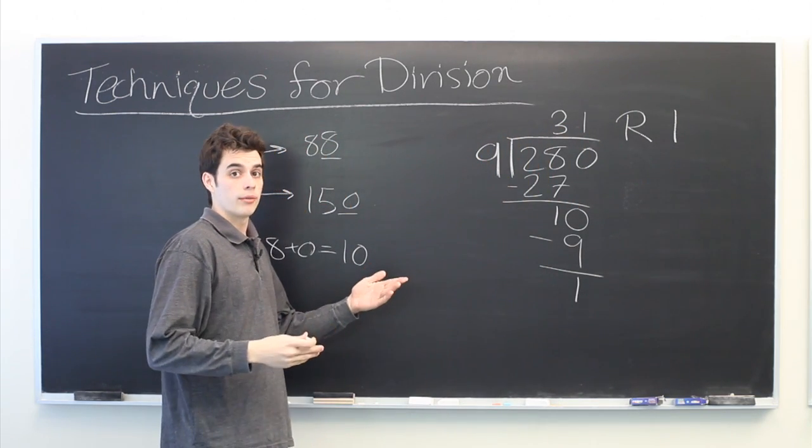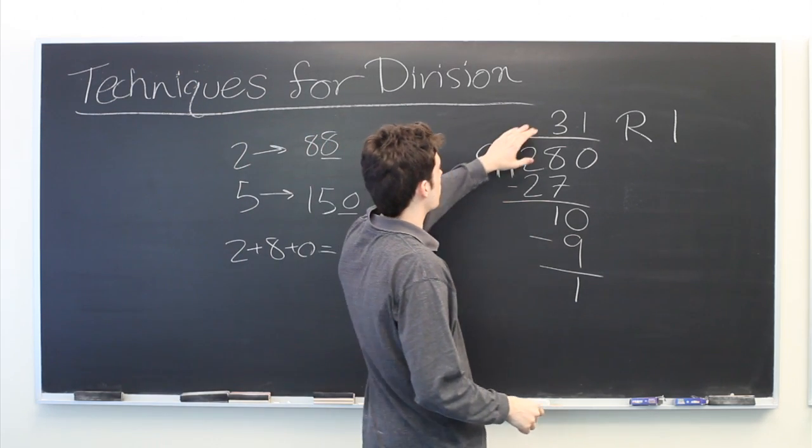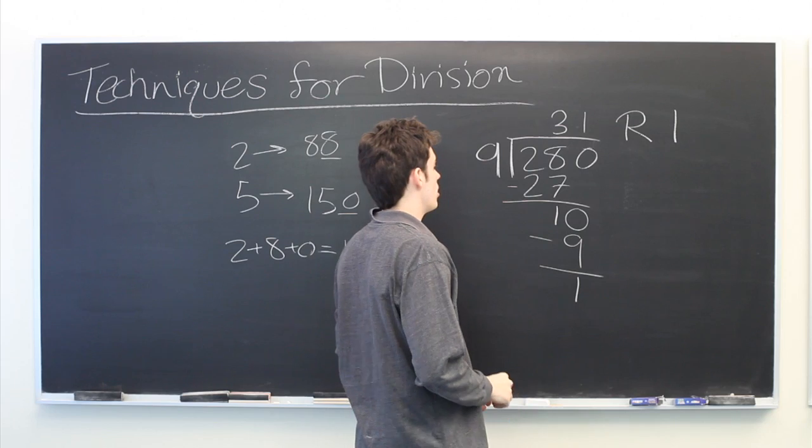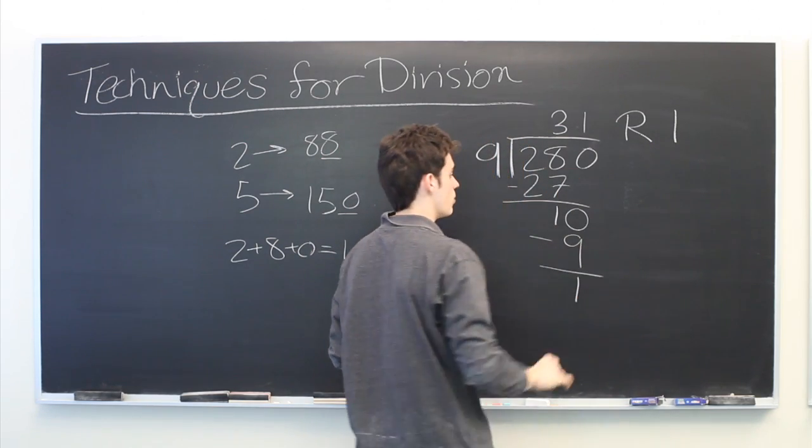And if you want, you can double check that this is the correct answer by multiplying through. 9 times 31 is 279. Add the remainder and you get 280.